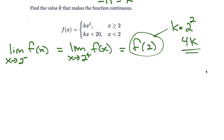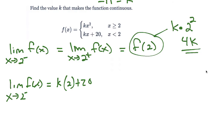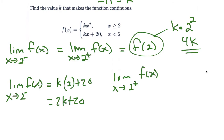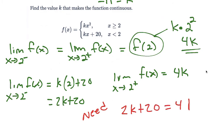If we're looking for the limit as x goes towards 2 from the left-hand side, that's going to be k times 2 plus 20, or 2k plus 20. The limit as x goes towards 2 from the right-hand side is also f of 2, which is 4k. In order for our function to be continuous and not make a jump, we need 2k plus 20 to equal 4k. Subtracting 2k from both sides, k has to be 10.